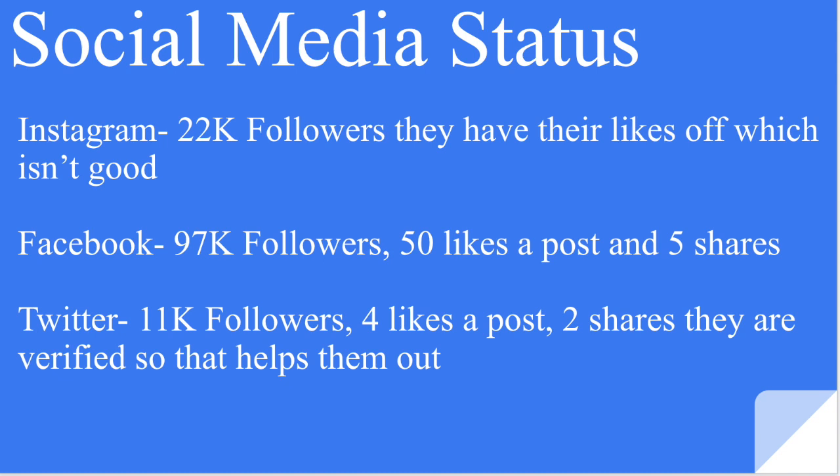Going through all their social medias: their Instagram has 22,000 followers but they have their likes turned off, which isn't good because you need to see engagement relative to followers. Their Facebook has 97,000 followers — a ton of reach — but they only get about 50 likes and 5 shares per post, which seems low for that following. Their Twitter has 11,000 followers and only gets 4 likes and 2 shares per post, which is definitely not good. They should get at least 100 likes per post. The good thing is that they are verified, which really helps them.